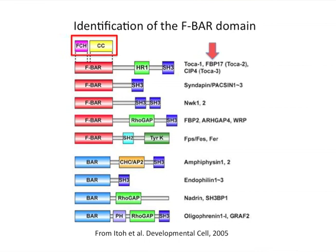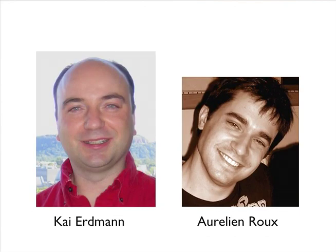Interestingly, we found that putative F-BAR domains were present not only in proteins with a putative role in endocytosis, but also in proteins known only for their role in actin function. For example, the F-BAR domain-containing protein TOCA1, a close homologue of FBP17, had been identified by Mark Kirschner and co-workers as the factor that critically synergized with CDC42 and N-WASP in actin nucleation. In work that included, beside Toshiki Ito, the important contributions of two other outstanding postdocs, Kai Erdmann and Aurelien Roux, we carried out a series of functional studies of selected BAR domain proteins, FBP17 in particular.